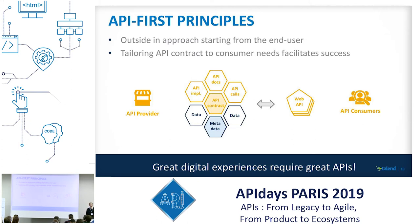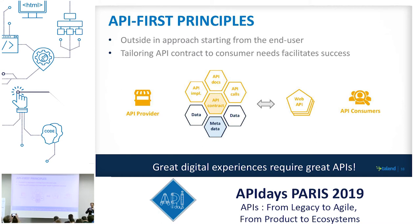The best approach to make it successful is to really start from your API consumer — it's an outside-in approach. Then you define your API, typically starting with the API contract. It's interesting that as part of the API contract you have important metadata and data schemas that help you capture the data structures exchanged through the API operations. Then you implement and document the API, and when done you can start taking API calls and moving data from the API provider to the API consumer.